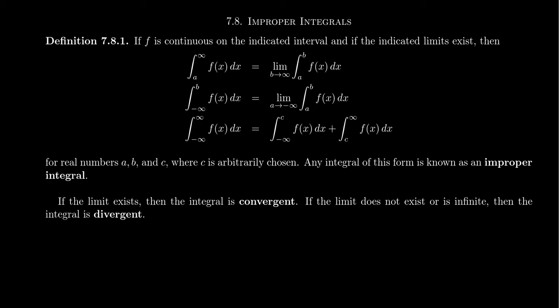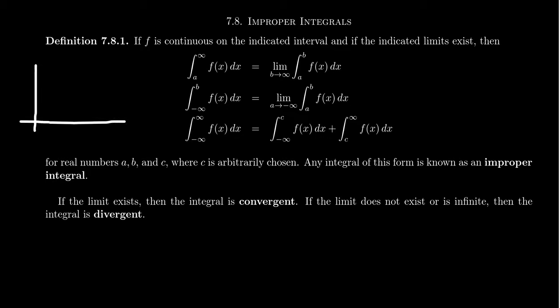What does it mean for an integral to be improper? Imagine we have some continuous function f, and we're interested in integrals where we find the area under the curve from some fixed finite value a, but we go off towards infinity. Visually, we have a function that is asymptotic to the x-axis, and we ask: could this region going off towards infinity have a finite area? It turns out with the right function it can be, and sometimes it's not. So what we mean is we take the integral from a to infinity.